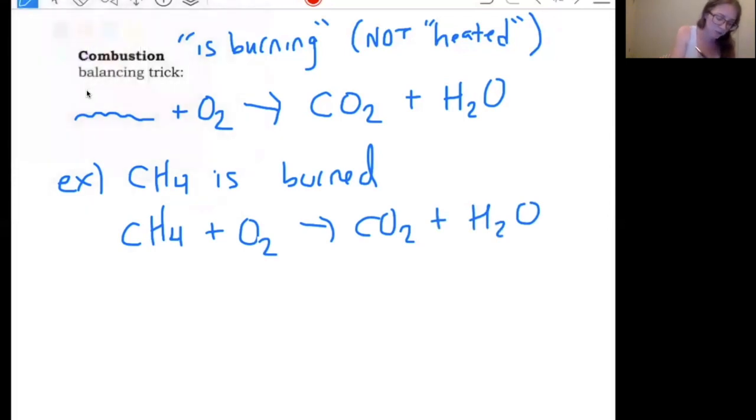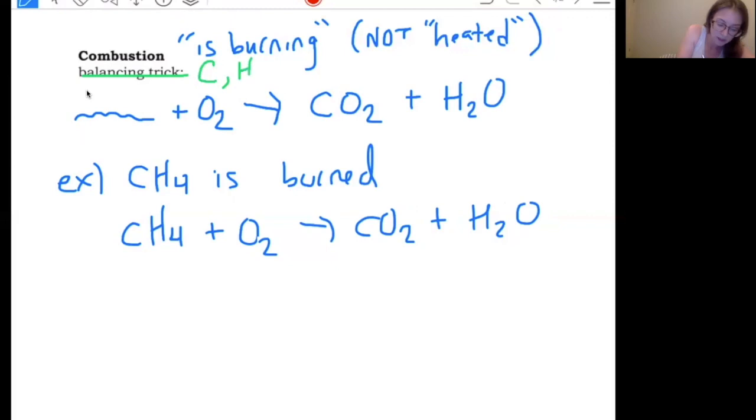What I do have up here at the top of this section of the notes is the words balancing trick. Balancing these can throw some people for a loop because you have oxygen in so many different places. So the balancing trick that I suggest you use is to go in alphabetical order, balance your carbons first, then your hydrogens and finish with your oxygens last. So on the left-hand side, I have one carbon on the right-hand side. I have one carbon. My carbons are balanced for the hydrogen on the left-hand side. I have four hydrogens on the right-hand side. I have two. So I need to fix that. I do that by putting a two in front of the water.